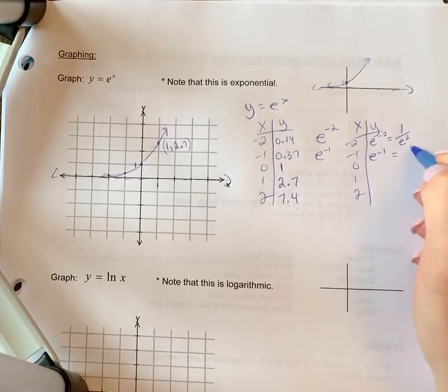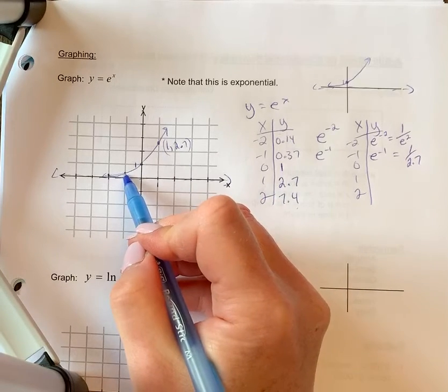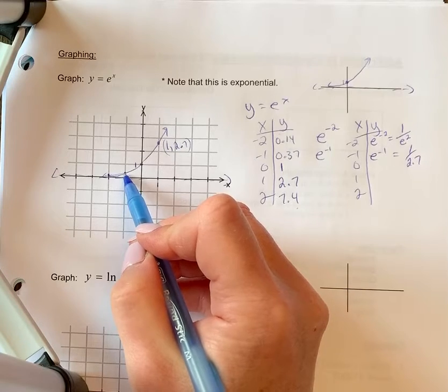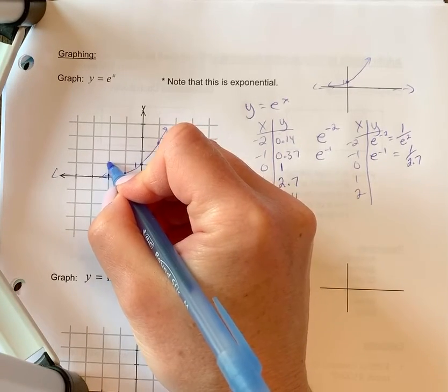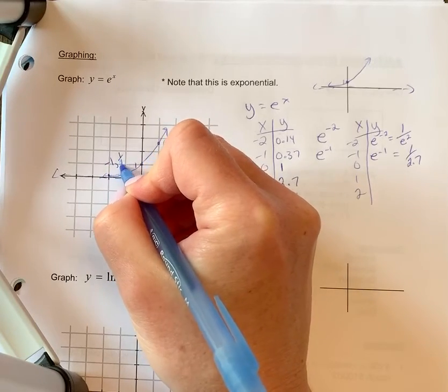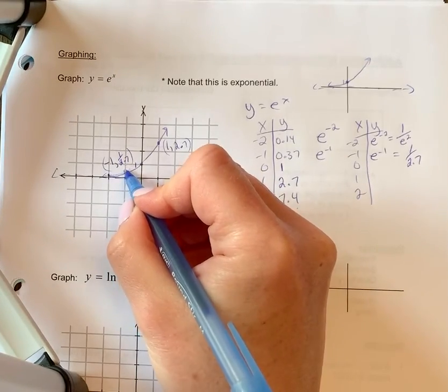e to the negative 1 is 1 over e, which is 1 over 2.7. Well, that's basically approximately one third. I can't tell the difference between one third and one over 2.7 as to my point. And I can simply label that point so that it is clear that that's the point negative 1 and 1 over 2.7, or you can say 1 over e even. So that's what this point is right here.